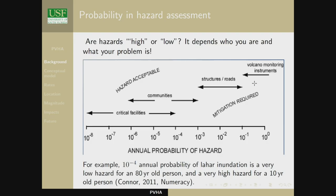If you're going to quantify volcanic hazards, you need a good idea of what probability means and what it means to different people. You can calculate risk based on the convolution of probability and the consequences or vulnerability of people — it might be cast in deaths, dollars, or loss. Risk has units; probability is unitless. Probabilistic volcanic hazard assessment stops with the probability, but that probability means different things to different people.